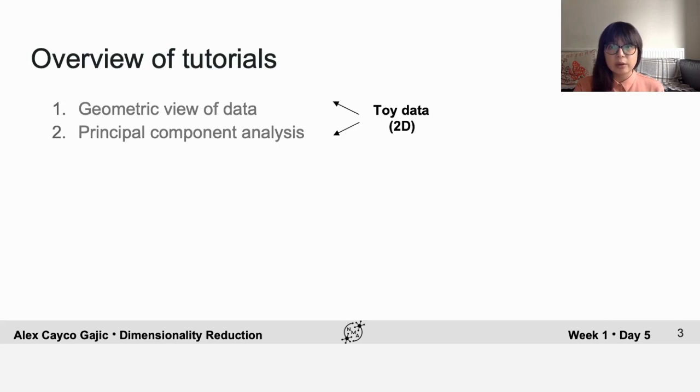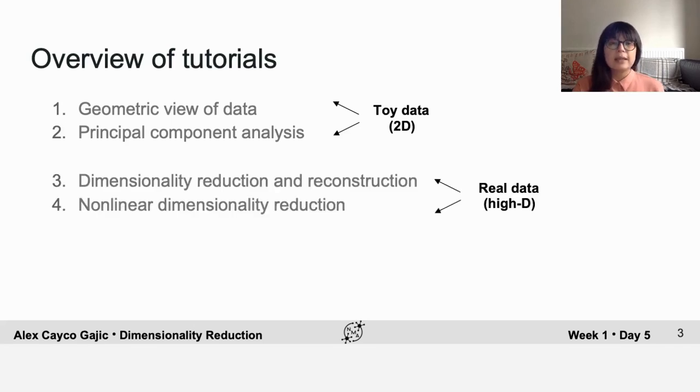Both of these are going to use toy data that is two-dimensional, and that's really going to be very useful for building your intuition. In the third tutorial, you will use PCA for dimensionality reduction in high-dimensional data. And then in the final tutorial, you will learn a nonlinear dimensionality reduction technique called TSNE.